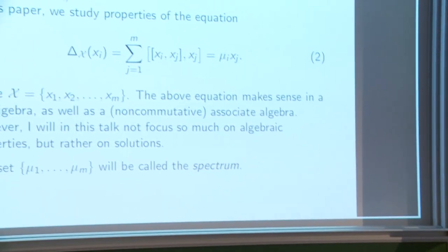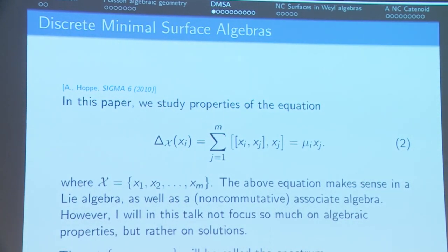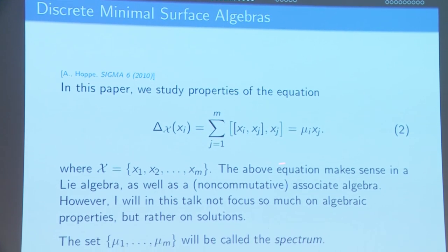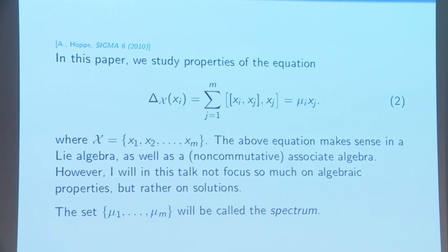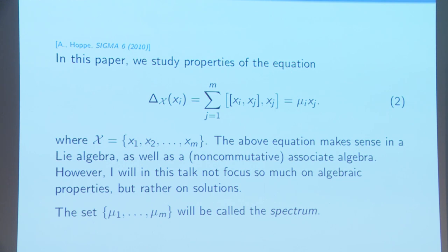This is an overview of one paper we wrote — from which I borrowed the title, Discrete Minimal Surface Algebras. Those equations correspond to minimal surfaces in spheres. We allow for an eigenvalue mu_i on the right-hand side to be arbitrary — it was minus 2 before, but we allow for arbitrary values, and we call this collection of mu_i's the spectrum. These equations make sense in a Lie algebra: you let x_i be elements of a Lie algebra, and you can make sense of this equation. Given a Lie algebra and a subset of elements, you want this equation to be solved.